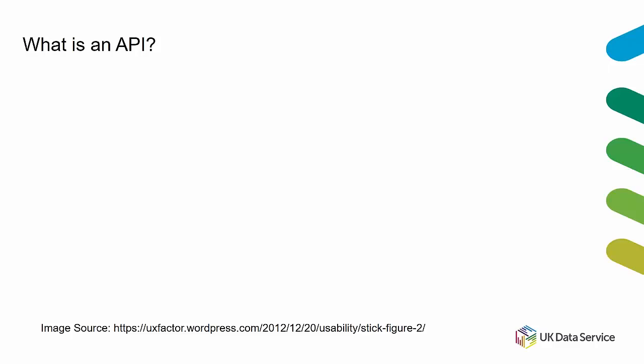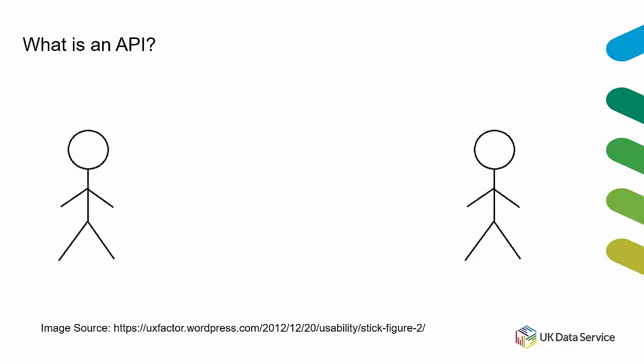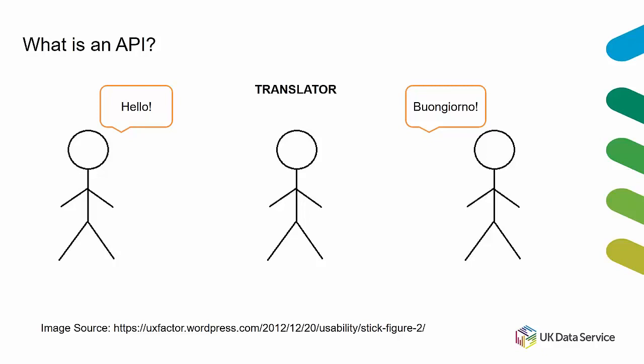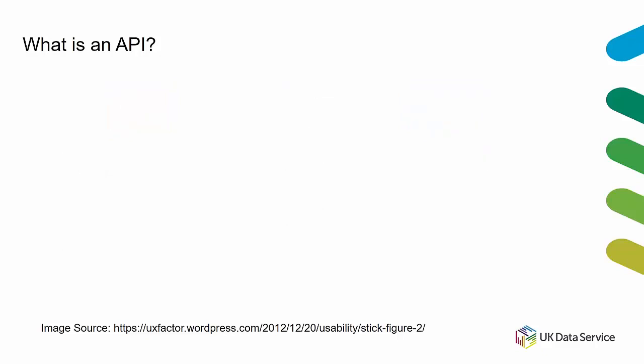Let's take a simple real-life example. Let's say we have an English speaker and an Italian speaker, and neither knows the other's language. How can they communicate? If they're lucky, they may have a real-life translator. These two individuals don't need to know how to converse directly — they just need to communicate what they want to say to a translator who does the heavy lifting. An API performs a very similar role.